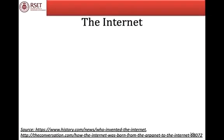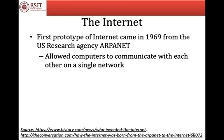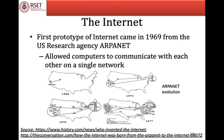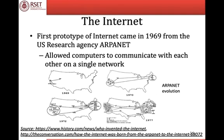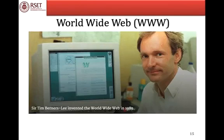Meanwhile, the invention of the internet was also underway. In 1969, the first internet prototype was invented by the US research agency ARPANET, which allowed communication among computers on a single network. This network later expanded to a network of networks, becoming the modern internet we use today. In 1989, Tim Berners-Lee invented the World Wide Web or www, which enables us to access content from different websites.